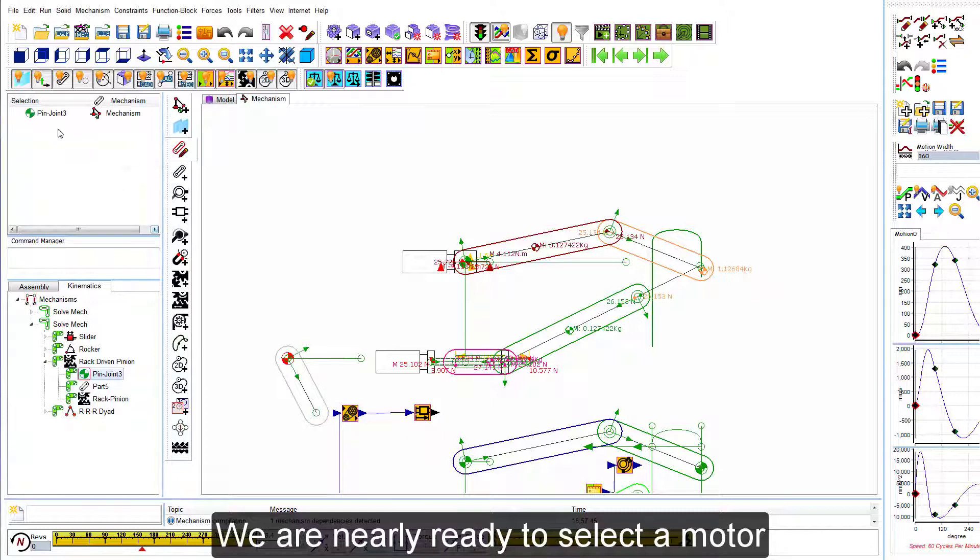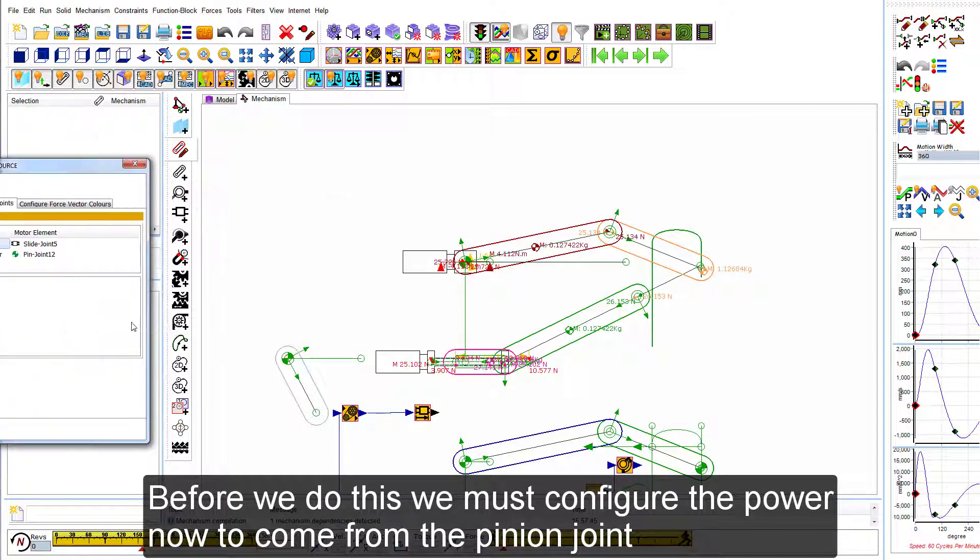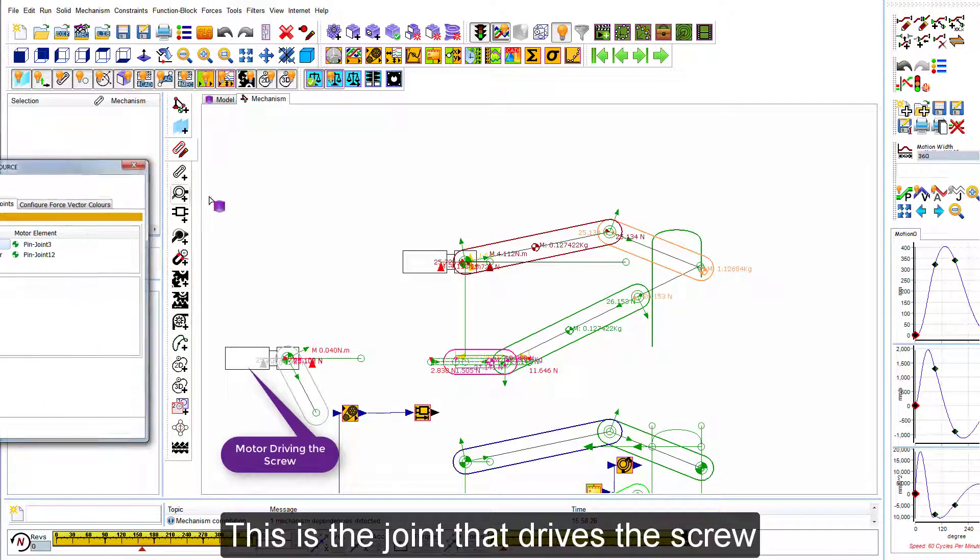We are nearly ready to select a motor. Before we do this though, we must configure the power now to come from the pinion joint, pinion joint 3. This is the joint that drives the screw.